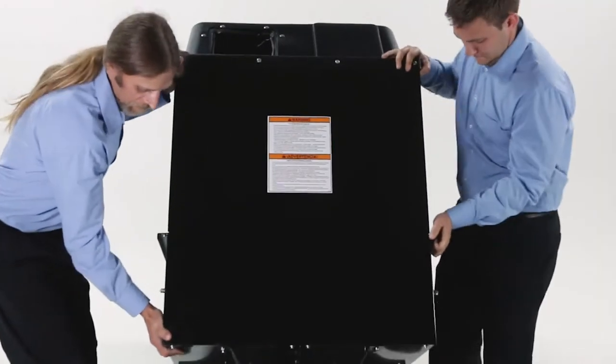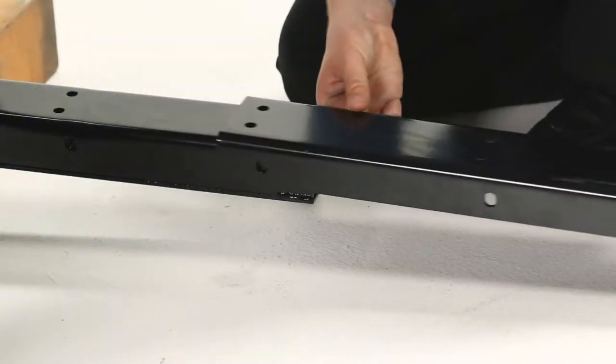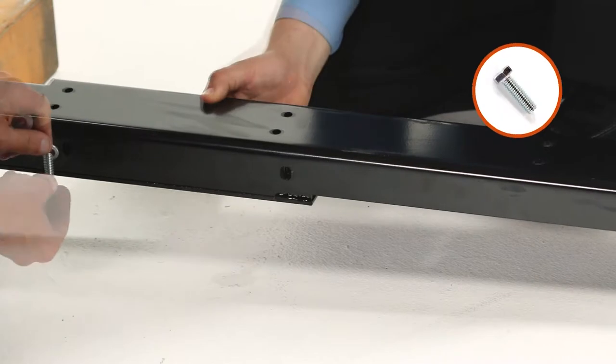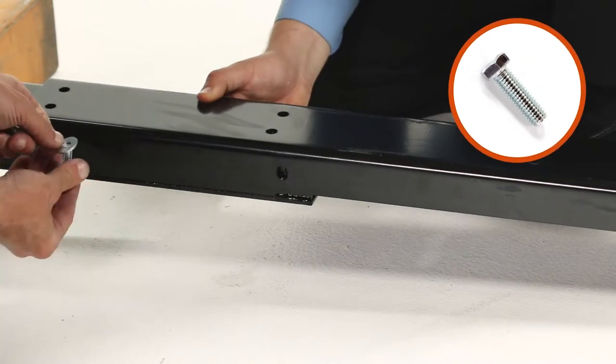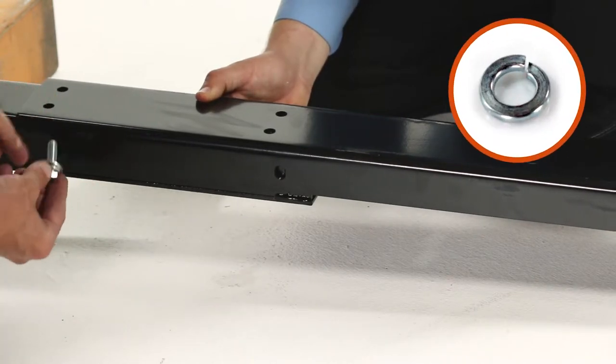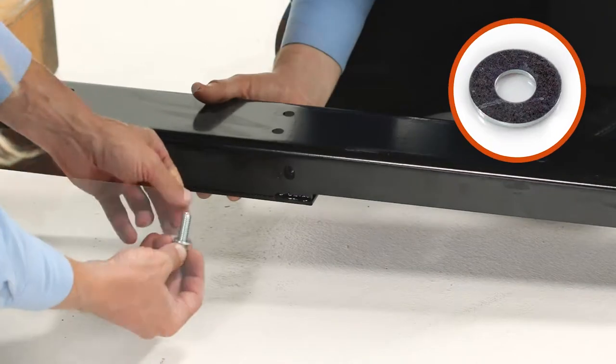Then, tip the cart forward onto its wheels. Now, align the front tongue and secure it with four 3⁄8 by 1 1⁄4-inch hex bolts, 3⁄8-inch lock washers, and 5⁄16-inch flat washers.